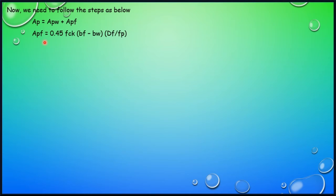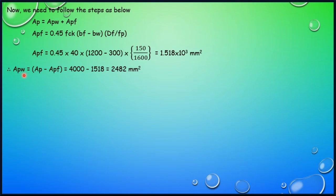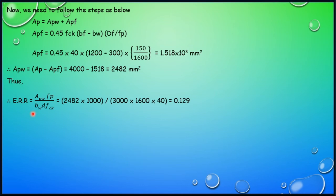APF is calculated using the formula: APF = 0.45 × FCK × (BF − BW) × DF / FPU. Substituting values, APF = 1518 mm² (approximately 1.518 × 10³ mm²). APW = AP − APF = 4000 − 1518 = 2482 mm². The effective reinforcement ratio is then: ERR = APW × FPE / (BW × FCK × D). Substituting, we get ERR = 0.129, which we may round to 0.13.